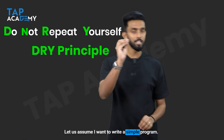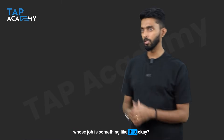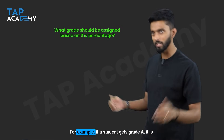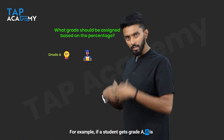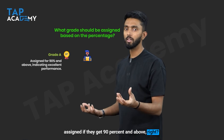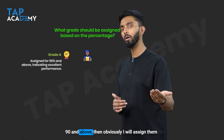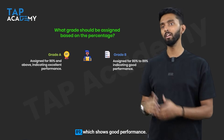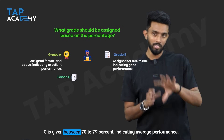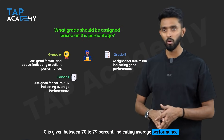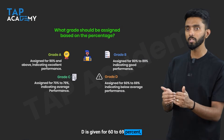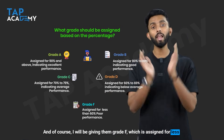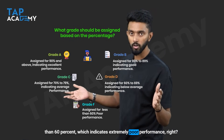Let us assume I want to write a simple program that figures out what grade should be assigned to a student based on their percentage. For example, grade A is assigned if they get 90% and above — excellent performance. B is given for 80 to 89 — good performance. C is given for 70 to 79 — average performance. D is given for 60 to 69 — below average, and grade F is assigned for less than 60%, indicating extremely poor performance.